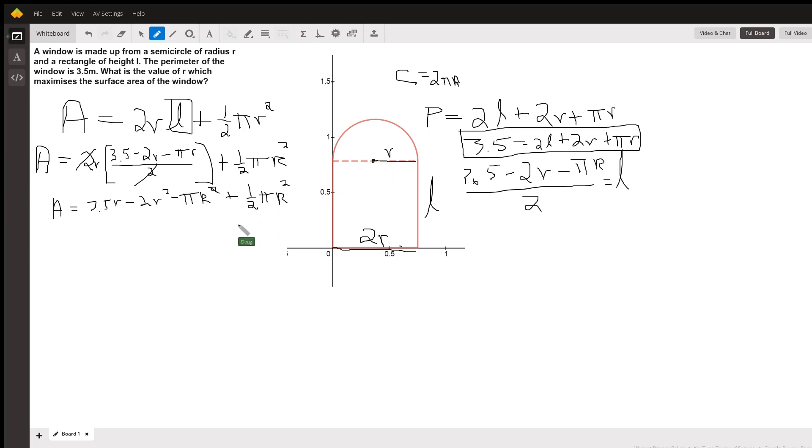And if we could find the derivative of that function, set it equal to 0, we'd have found either an R that produces either a maximum area or a minimum area. And we could find the second derivative to help us decide whether that was a max or a min. And I'll quickly take the derivative: 3.5 minus 4R minus 2πR plus πR. Set that equal to 0.